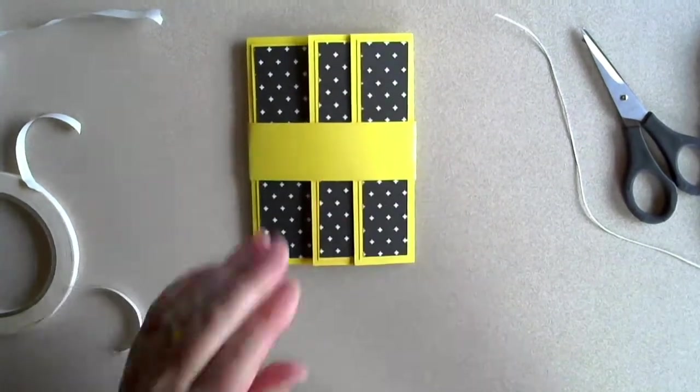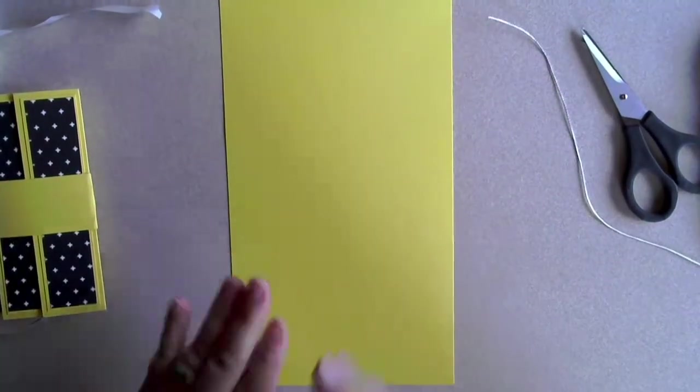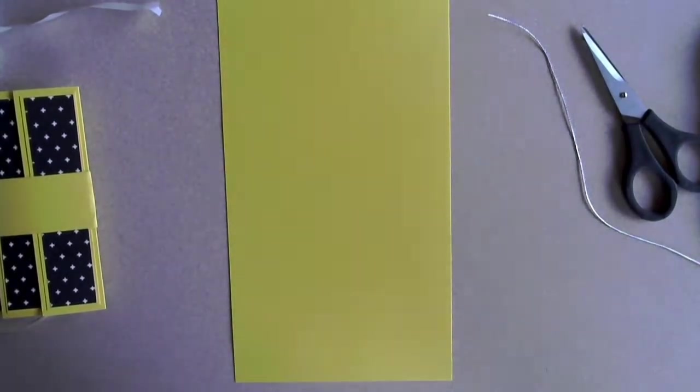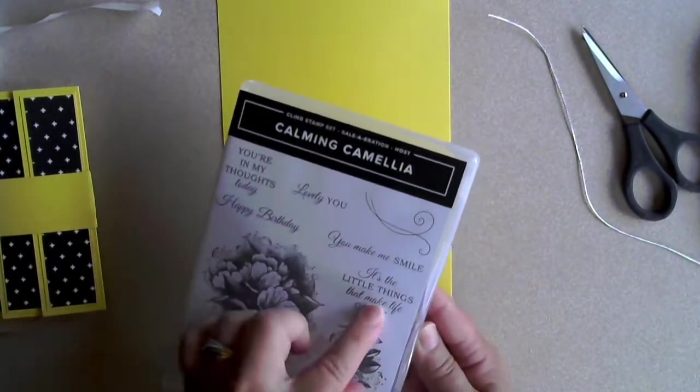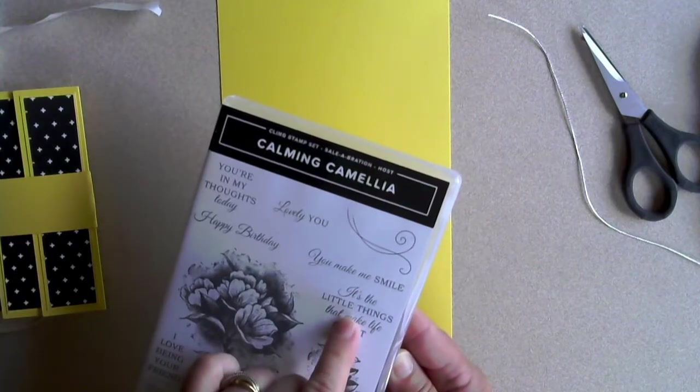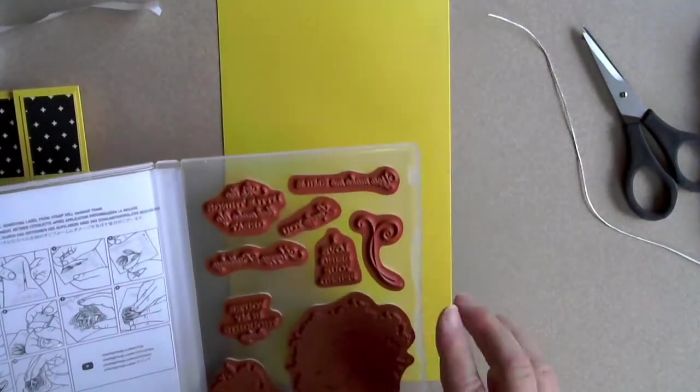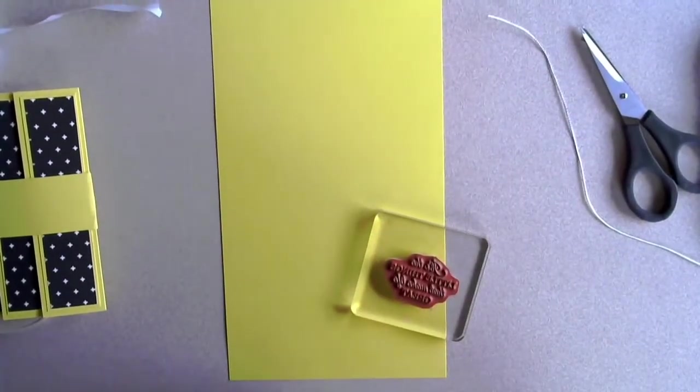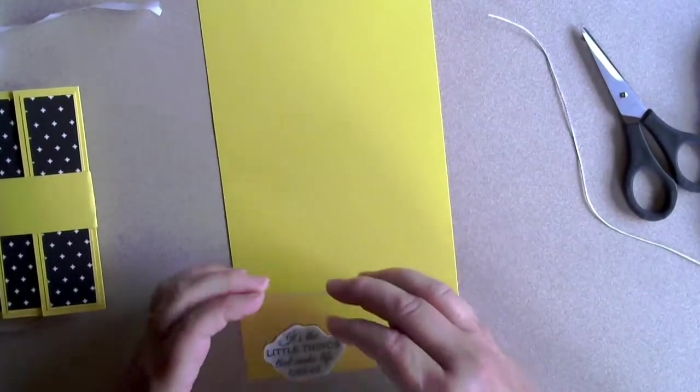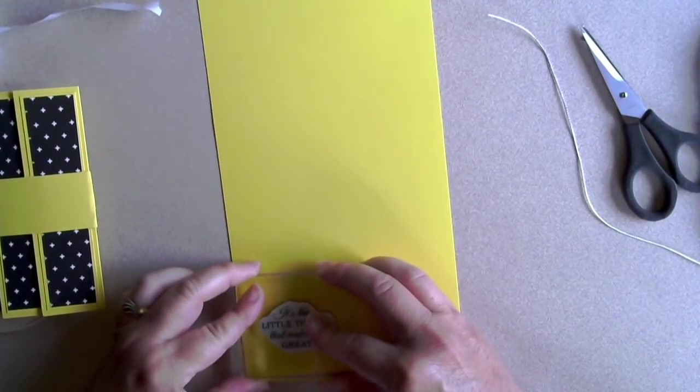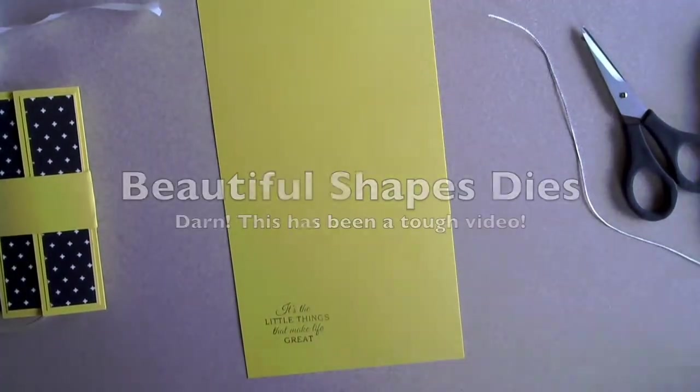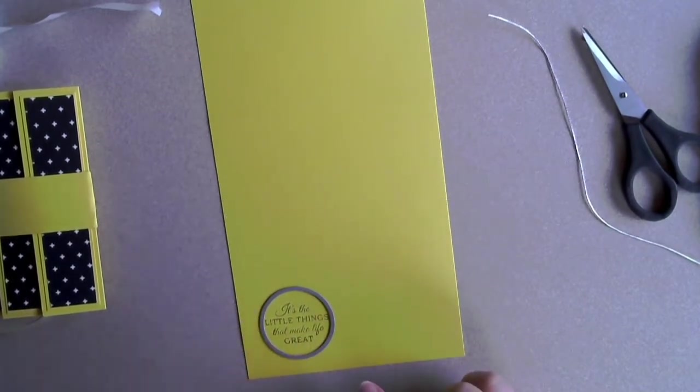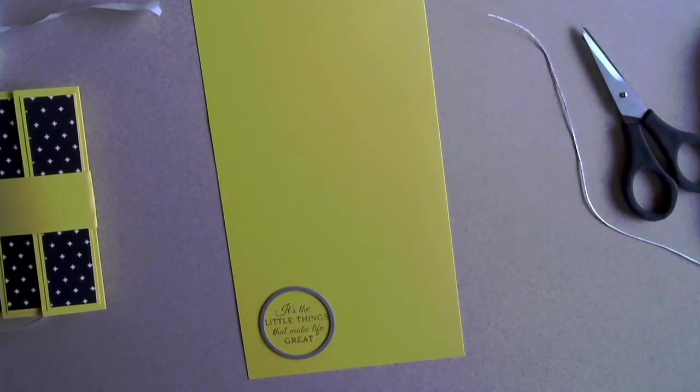And then we need to make our decoration for on the front. Let's pull in another piece of the daffodil paper. And I'm going to pull in the Calming Camellia stamp set. I love the greetings on this one. And we're going to use the, it's the little things that make life great. I think that would be perfect for this card. So we're just going to ink it up with some Memento Tuxedo Black. And then we're going to die cut it with the beautiful dies. And then I'm going to do a black circle that's just a hair bigger. I will be back in just a second.